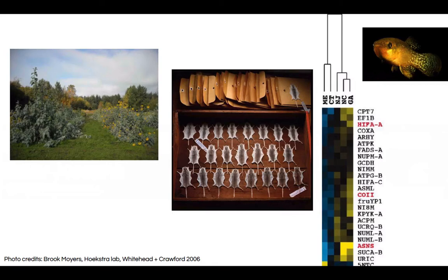As evolutionary biologists, we're generally really interested in understanding how organisms adapt to their local environments, especially to new and different environments. One way of answering this question is looking at the natural variation present within species and trying to understand what the selective forces are that shape this variation. If we see differences in traits like life history, color, or molecular traits like gene expression, can we explain the variation with neutral processes alone, or can we infer that selection has contributed to the divergence we see?